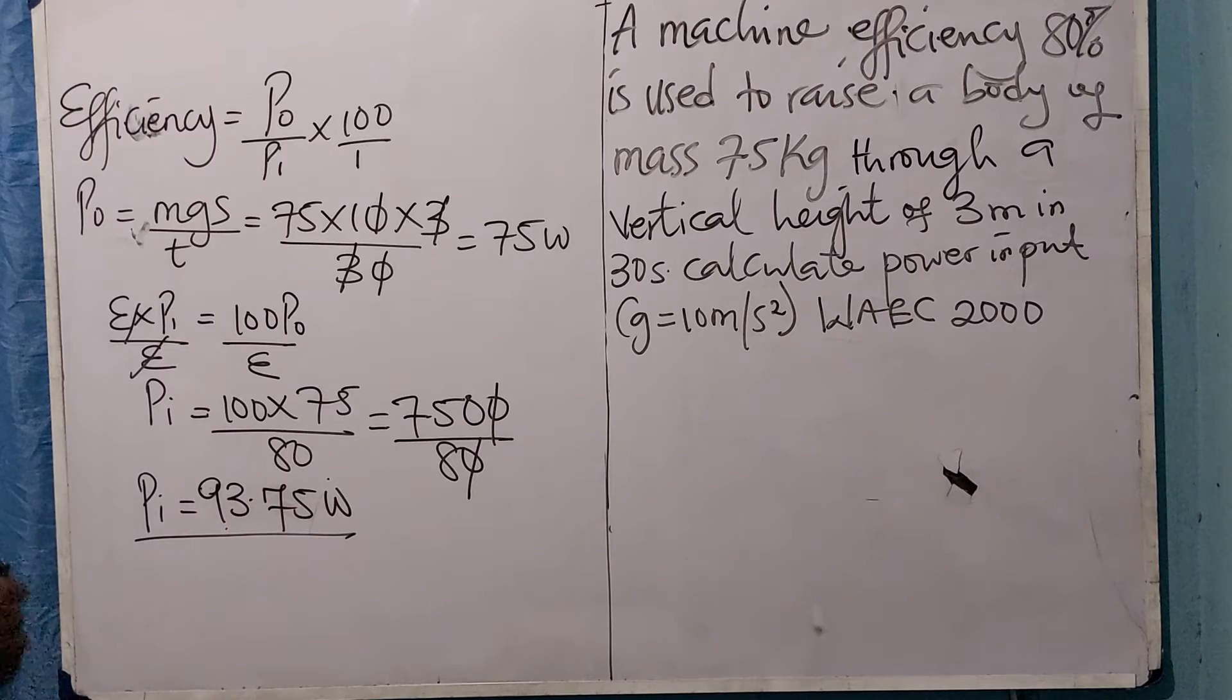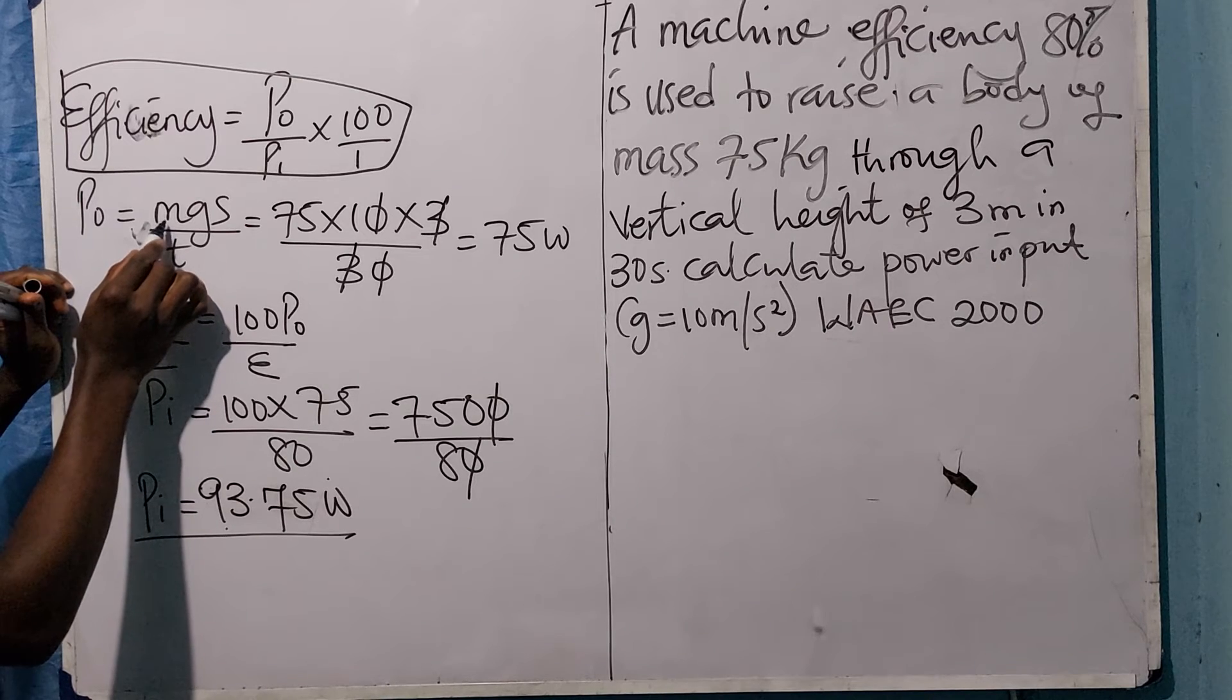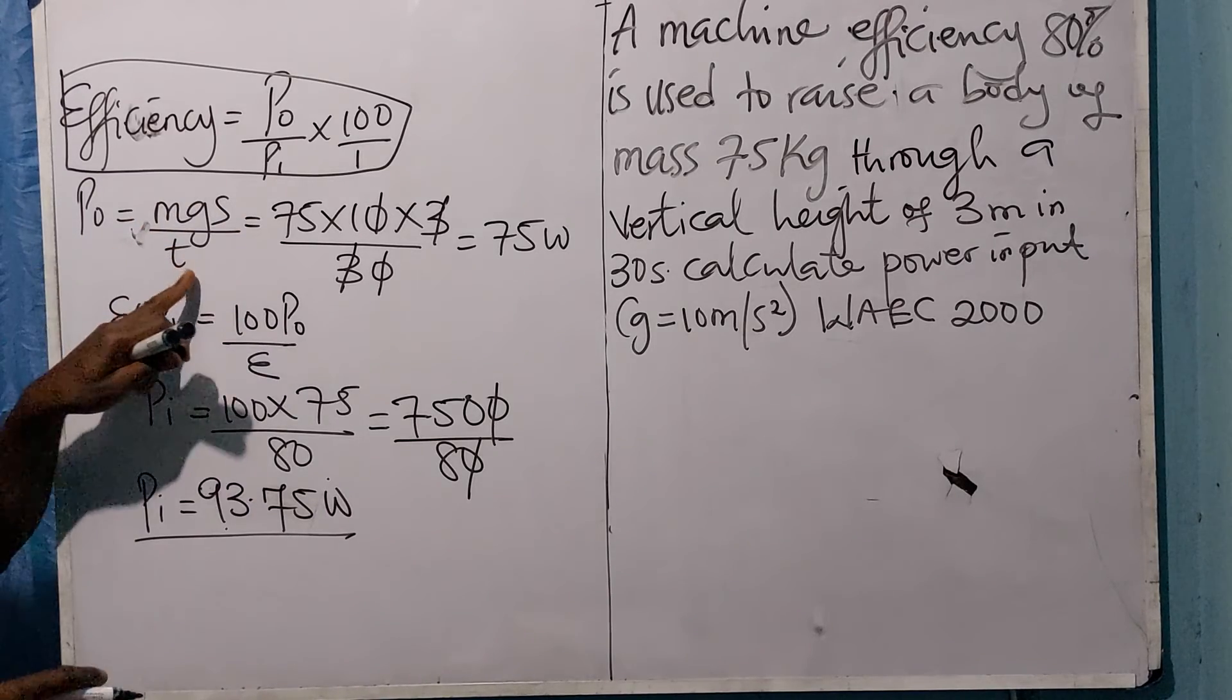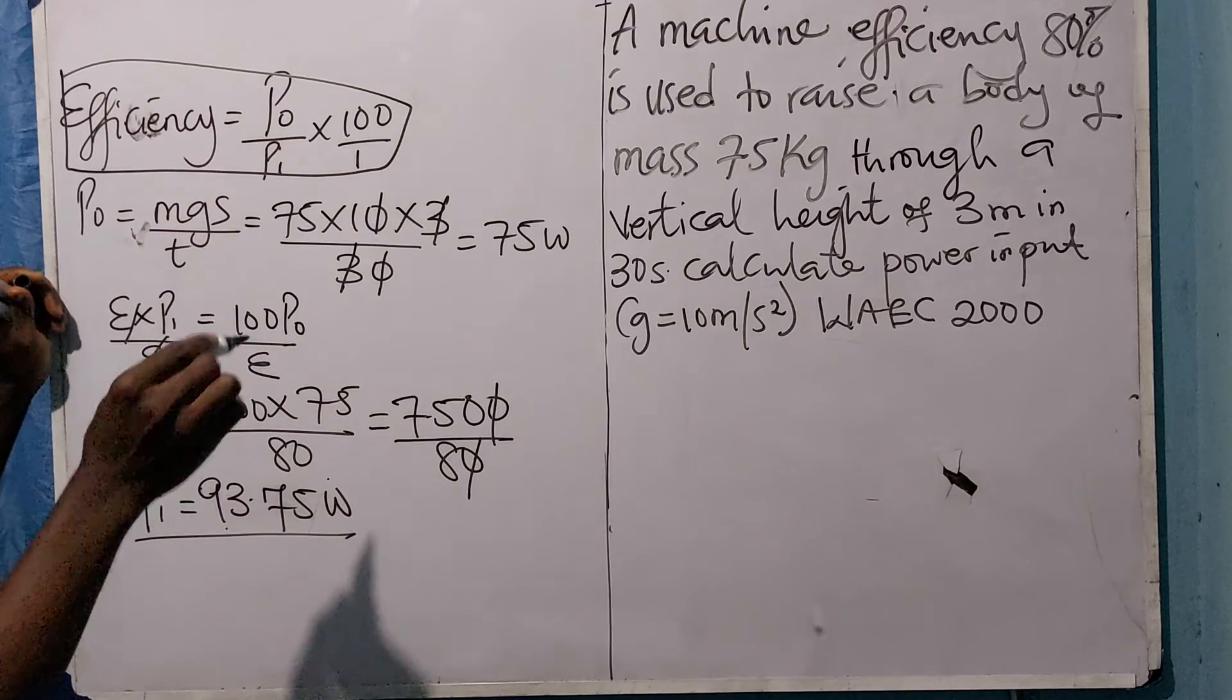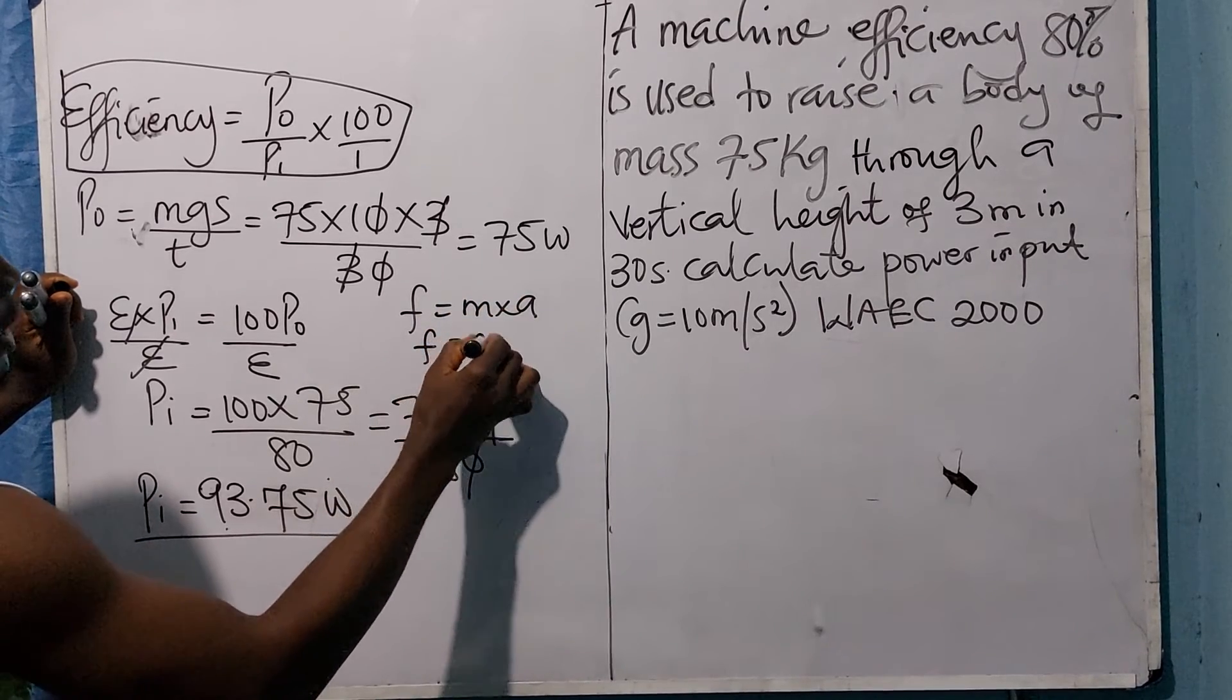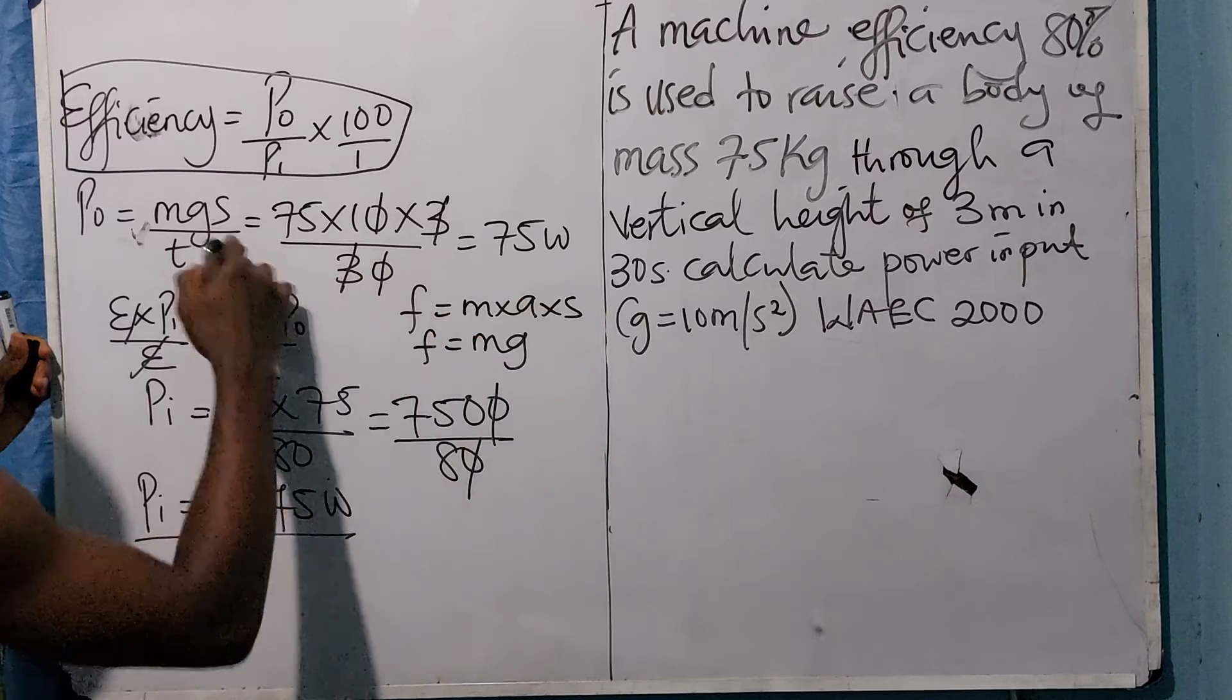This is how to solve questions on efficiency. The formula is power output equals force times distance. You know that power is work done over time, and work done is force times distance. When force is not given, you use F equals mg, since acceleration was not given you use g. That is how I got mg times the distance s.